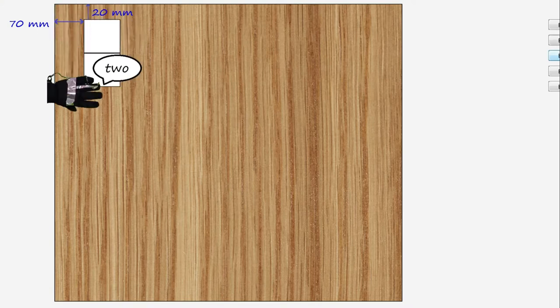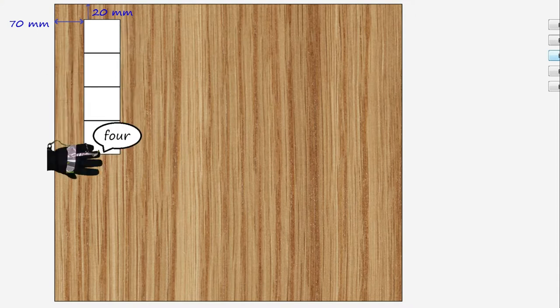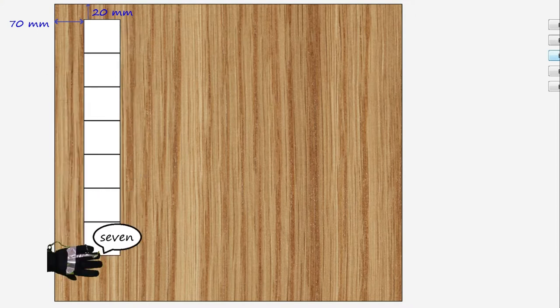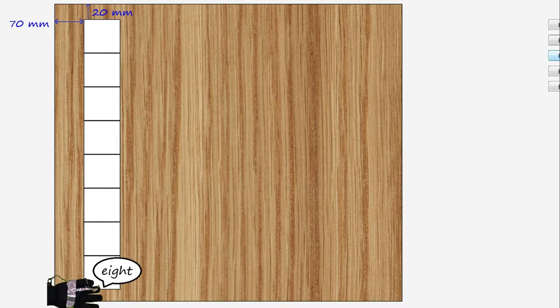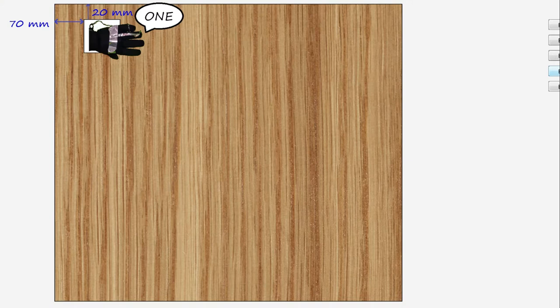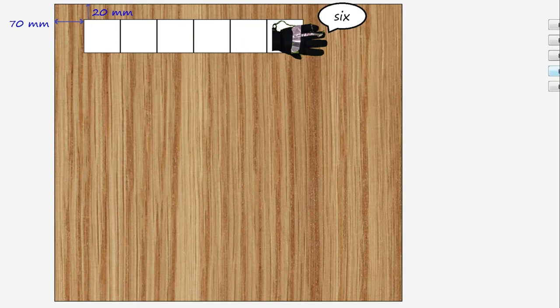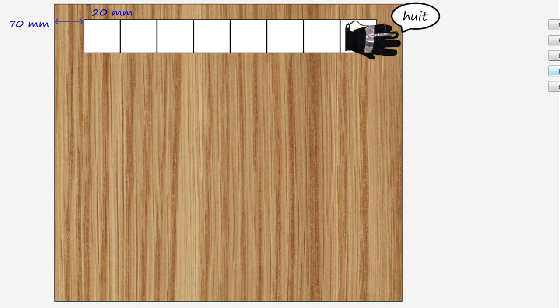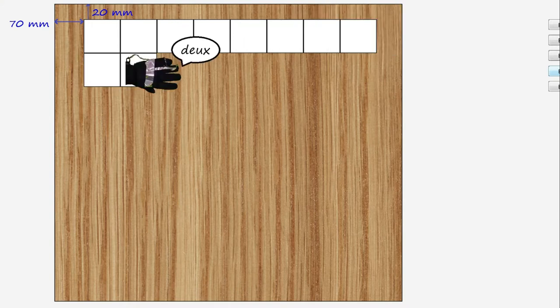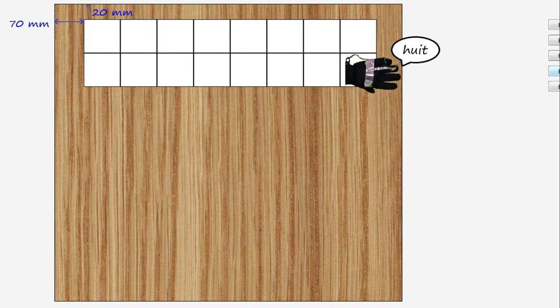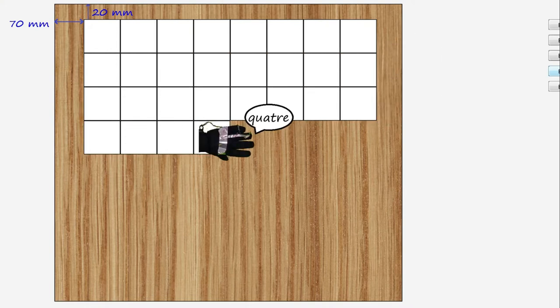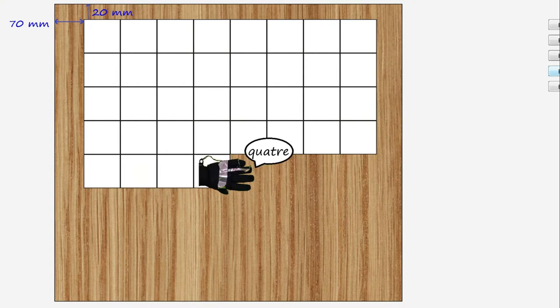Hey robot arm, start 20 millimeters from the top of the board. Count to eight, and each time you say a number, go 70 millimeters from the left side of the board and draw me a 58 by 58 millimeter square. Those instructions will get you a lovely column of squares on the left side of the board. We can improve it again. Hey robot, start 20 millimeters from the top of the board, count to eight, and each time you say a number, go 70 millimeters from the left side of the board and start counting to eight in French. Each time you say a French number, draw me a 58 by 58 millimeter square, then move your marker 58 millimeters to the right. That will get you a lovely 8 by 8 grid.